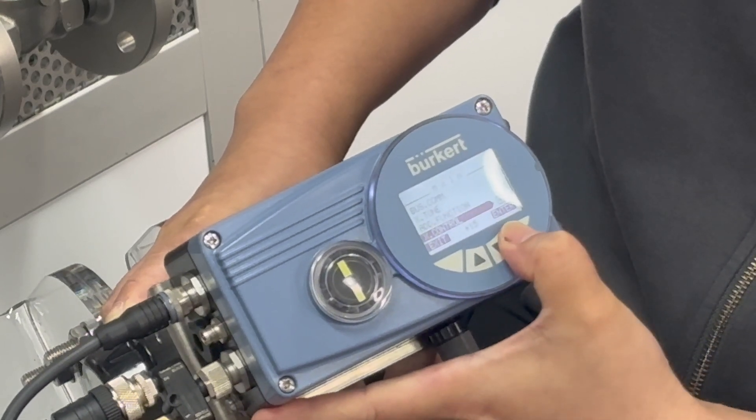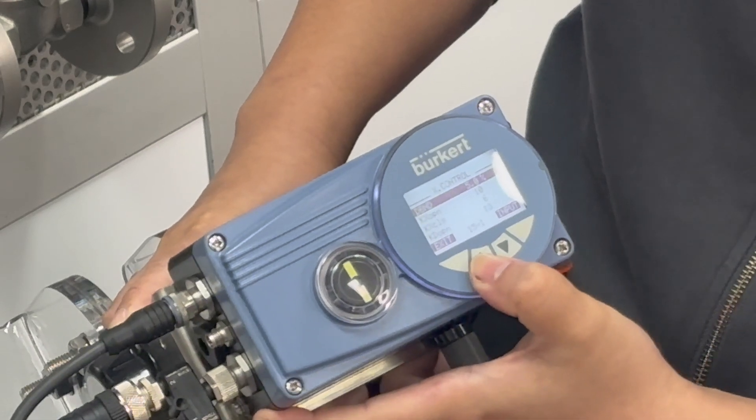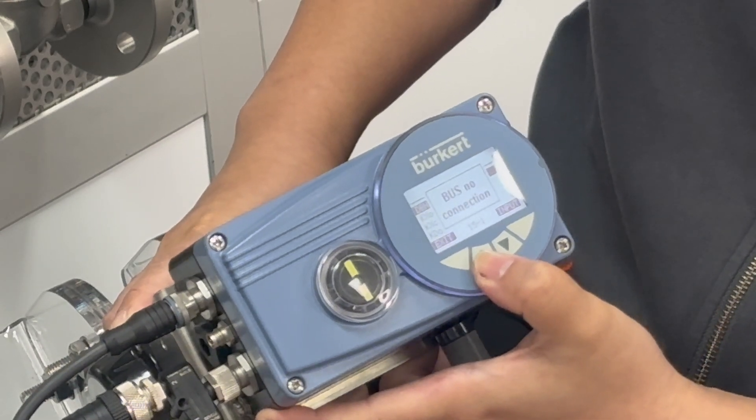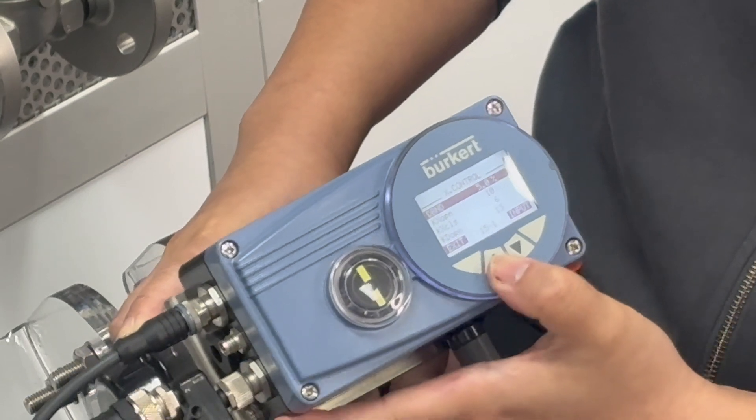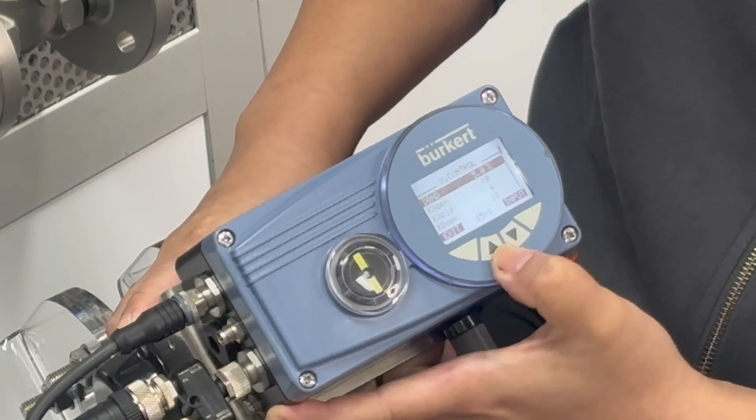Scroll down to X control. What you can do with the dead band is increase it from anywhere between 0.1 to 5%. This will eliminate the unit from hunting.